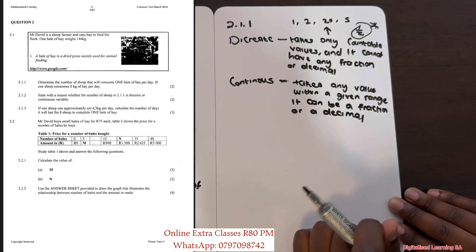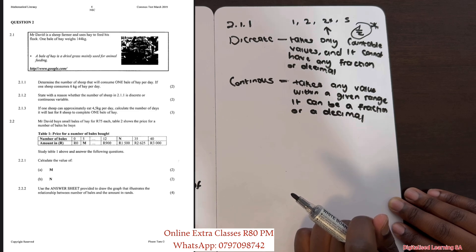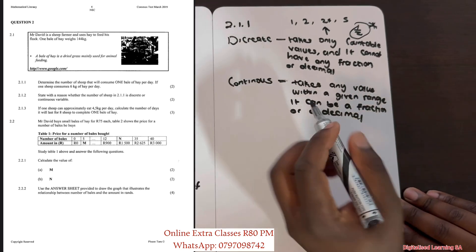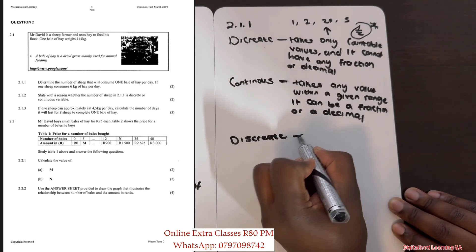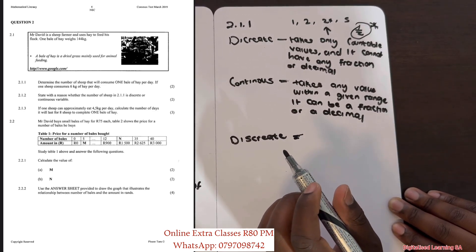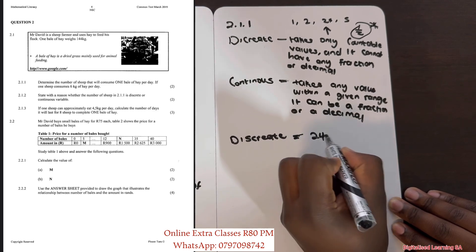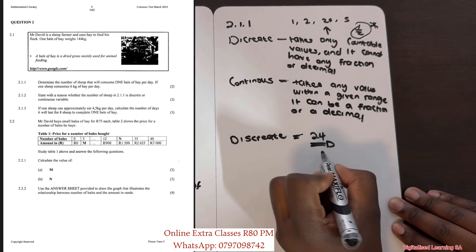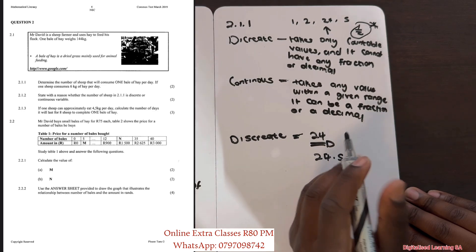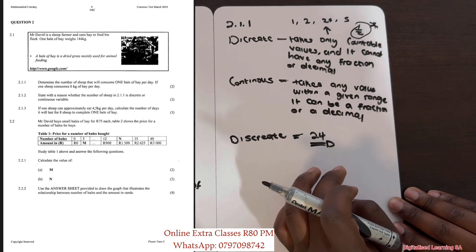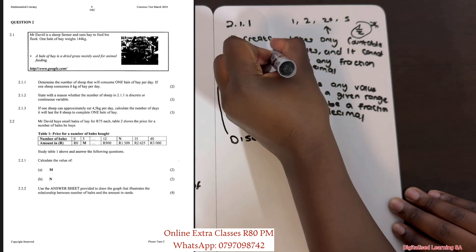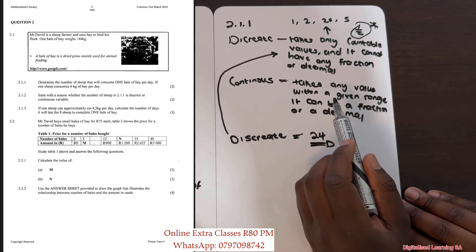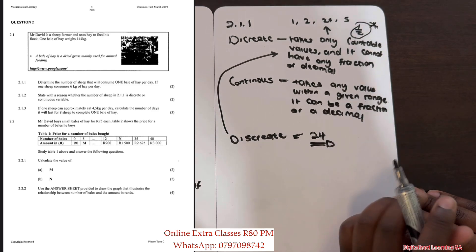Going back to our question — state with a reason whether the number of sheep in 2.1.1 is discrete or continuous. Our answer is discrete, because the number of sheep that consume one bale of hay per day is 24, and they can never be 24.5. There is no half a sheep — it takes only countable values and cannot have any fraction or decimal.